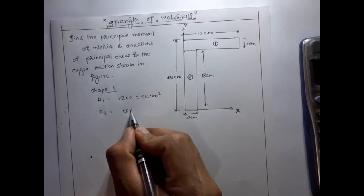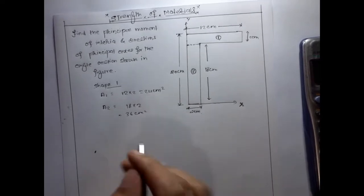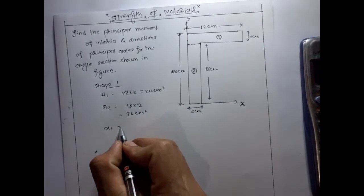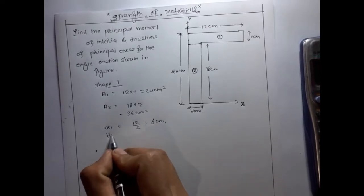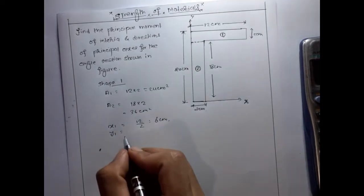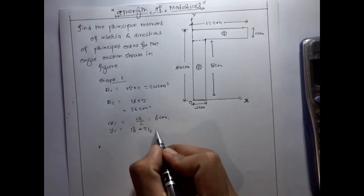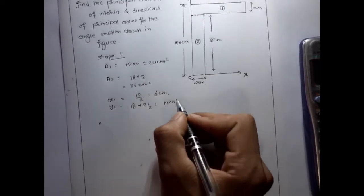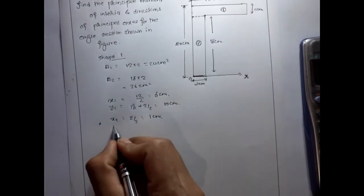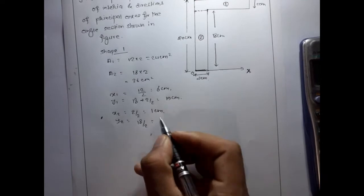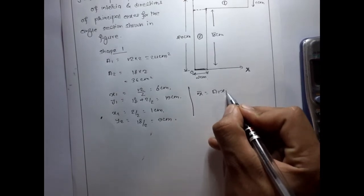For shape one: A1 = 18 × 2 = 36 cm². The centroid coordinates are x1 = 6 cm from the reference and y1 = 19 cm. For shape two: x2 = 1 cm and y2 = 18/2 = 9 cm. So we have x̄ and ȳ for each sub-shape.